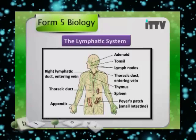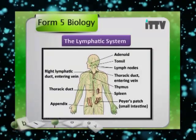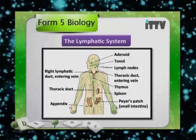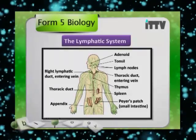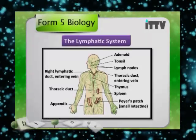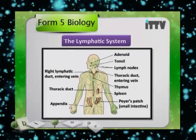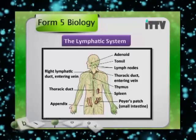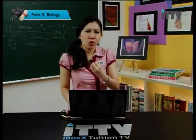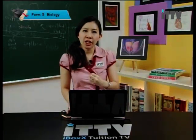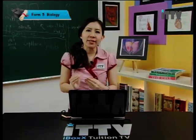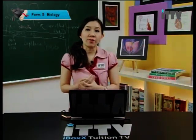Now we look at the lymphatic system. If you refer to the diagram, it shows you different parts of the lymphatic system. The lymphoid organs consist of the thymus gland, spleen and tonsils. When we have a sore throat, our tonsils will actually be enlarged, red and inflamed. It's because the lymphocytes in the tonsils are actually trying to fight against the germs that are causing us to have a sore throat.